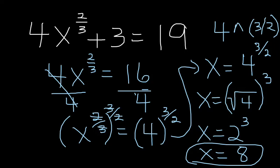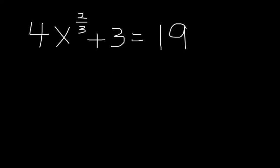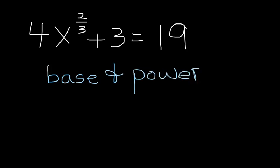So each time you go through three steps, you start out by simplifying, by getting your base in power by itself. And then once you have the base in power by itself, you do the reciprocal power.